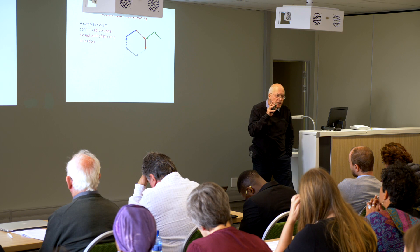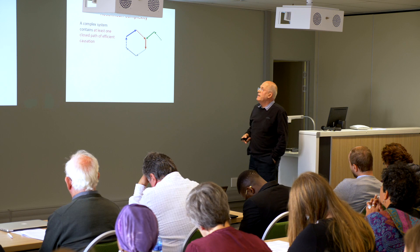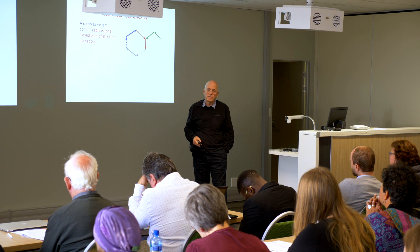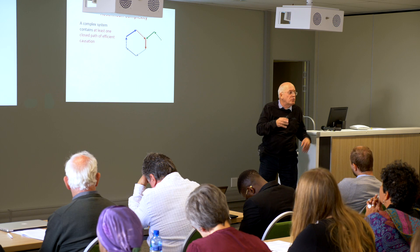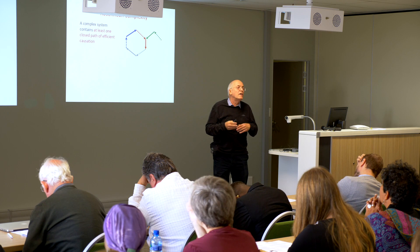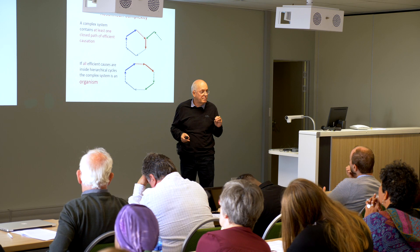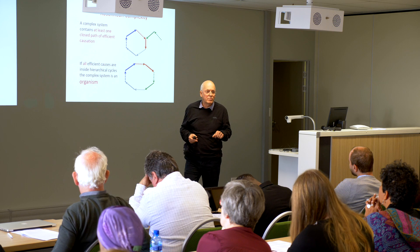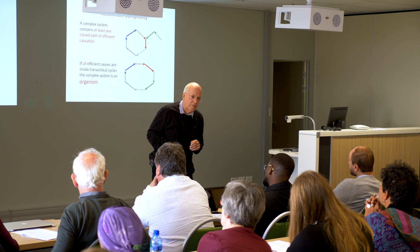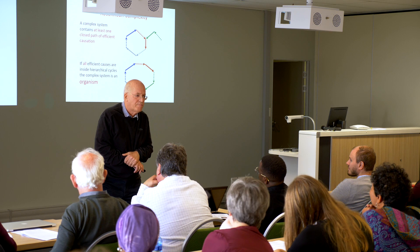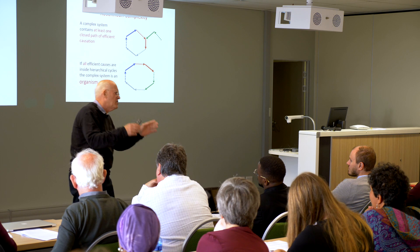Rosen claimed — and this is his take on complexity — that a complex system contains at least one closed path of efficient causation. Not all efficient causes have to be in the cycle; it just has to contain such a cycle. But as a biologist, what interested me is that he said if all the efficient causes are inside hierarchical cycles, the complex system is an organism. You are such a system. You had breakfast today. What happens to the breakfast? It gets broken down — proteins into amino acids, fatty acids, and so on.